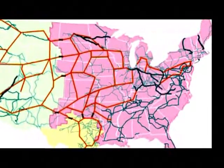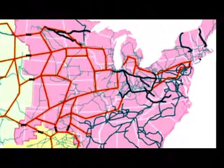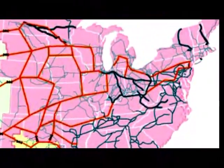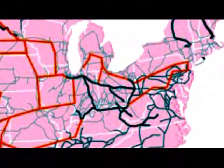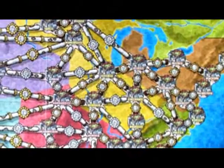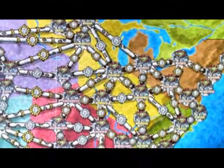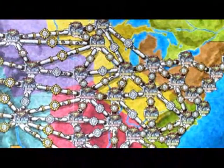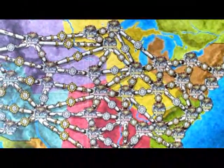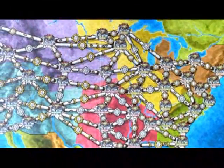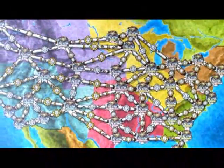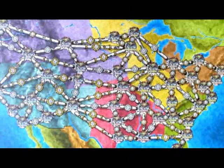The power grid of a modern industrial nation is a highly complex and intricate creation. Different regions demand power at different levels at different times. As a result, power is often consumed at great distances from the place it is generated. One city may have a huge demand at the same time another's requirement is relatively meager. The power network is set up to divert surplus electricity from light demand areas to those where the needs are greater.